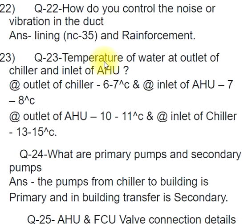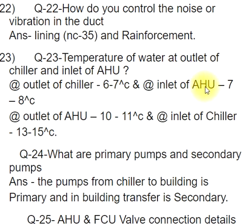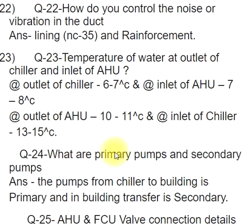Q23: Temperature of water at outlet of chiller and inlet of AHU. At outlet of chiller: 6–7°C; at inlet of AHU: 7–8°C. At outlet of AHU: 10–11°C; at inlet of chiller: 13–15°C.